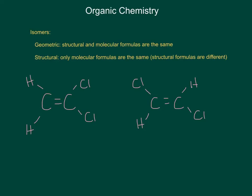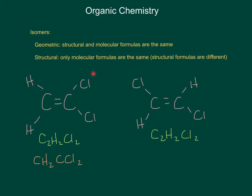Now let's look at these two other molecules. As before, I'll start with the molecular formulas: the left compound is C2H2Cl2, and the right compound is also C2H2Cl2. For the structural formulas, the left compound is CH2 and CCl2, because the left carbon is attached to two hydrogens and the right carbon is attached to two chlorines. The right compound's structural formula is CClH and CClH. So the structural formulas are different while the molecular formulas remain the same.